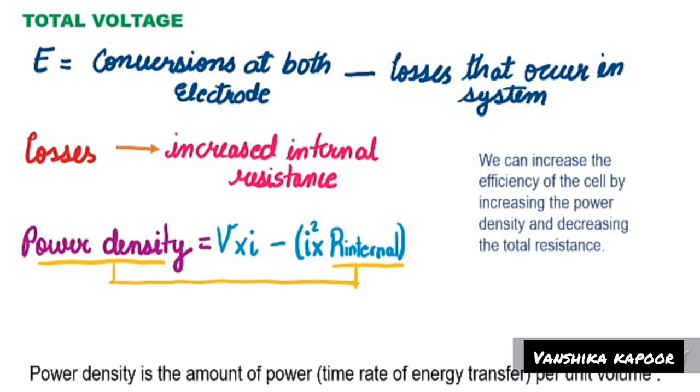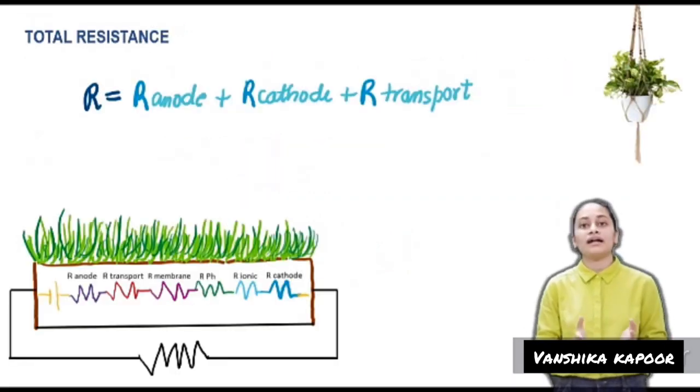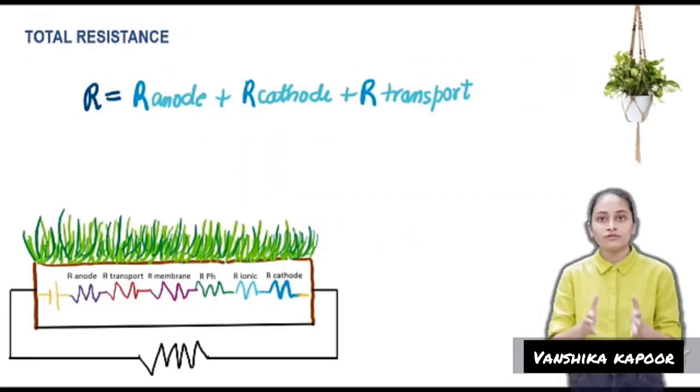These losses caused by several factors lead to increased internal resistance. This resistance should be decreased in order to increase the power density, as current and power densities are very dependent on internal resistance. It can be calculated by adding the total resistance of anode, cathode, and transport resistance.